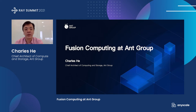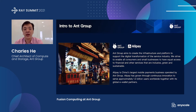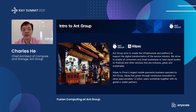Hello everybody, this is Charles He from Ant Group. Today I'm glad to share with you about fusion computing we built at Ant with Ray. Ant Group is a technology company in China that aims to create infrastructure and platform to support the digital transformation of the service industry. We strive to enable all consumers and small businesses to have equal access to financial and other services that are inclusive, green, and sustainable. Alipay is one of our brands — China's largest mobile payment business, serving approximately 1.3 billion users worldwide together with its global partners.